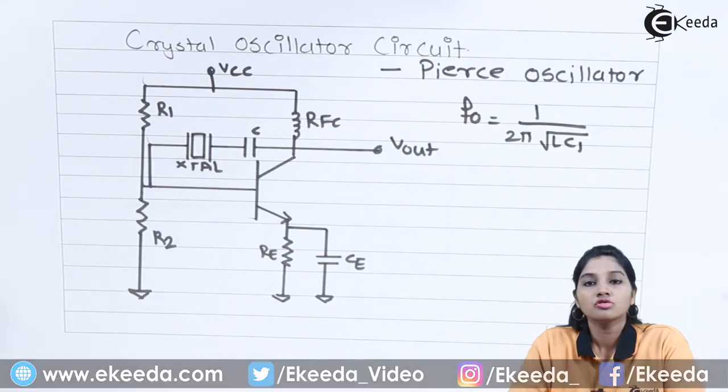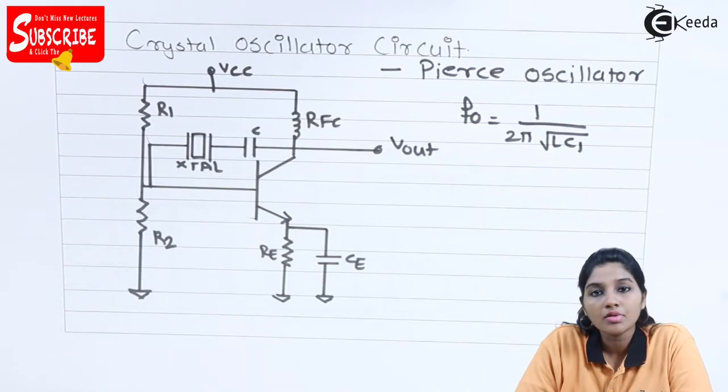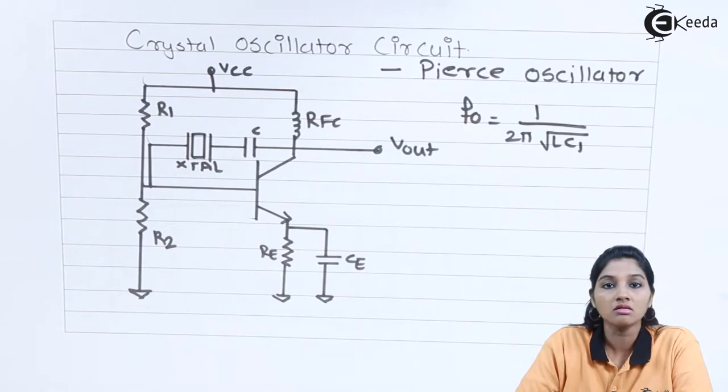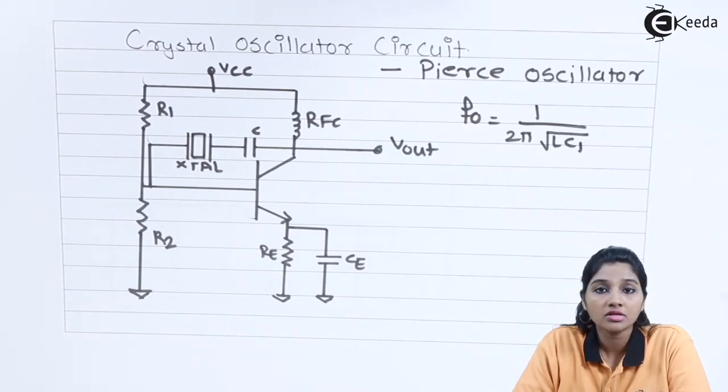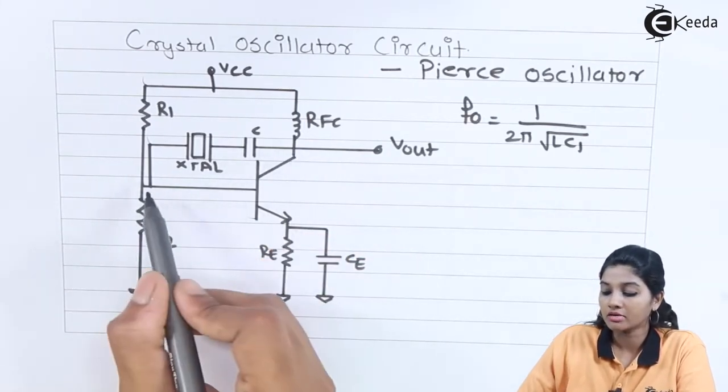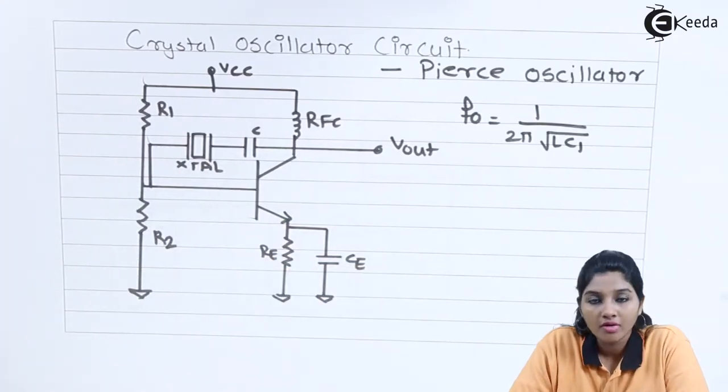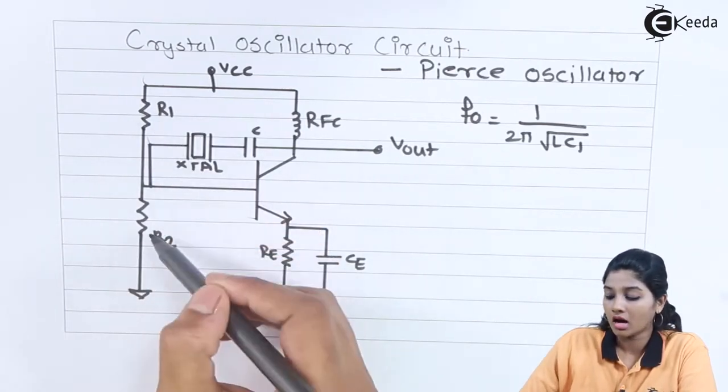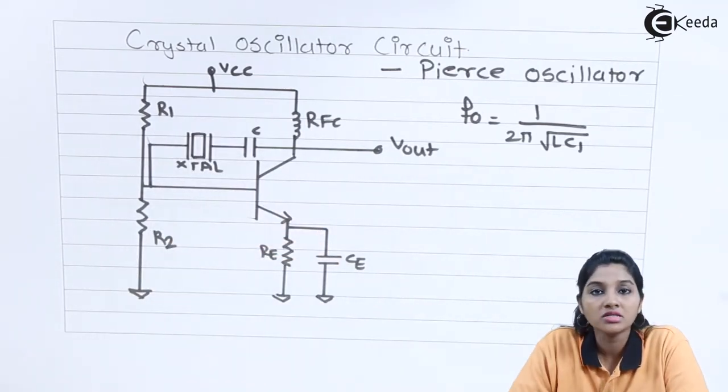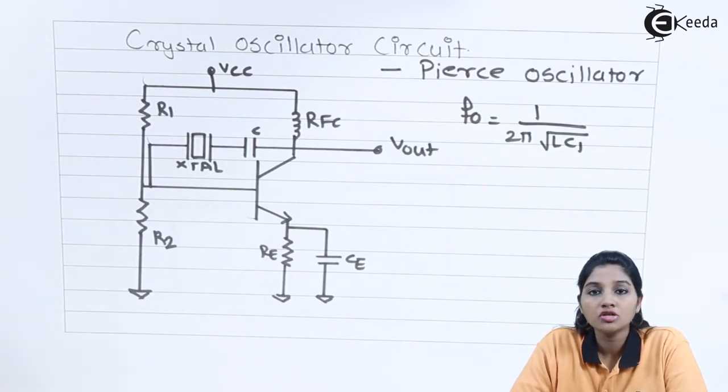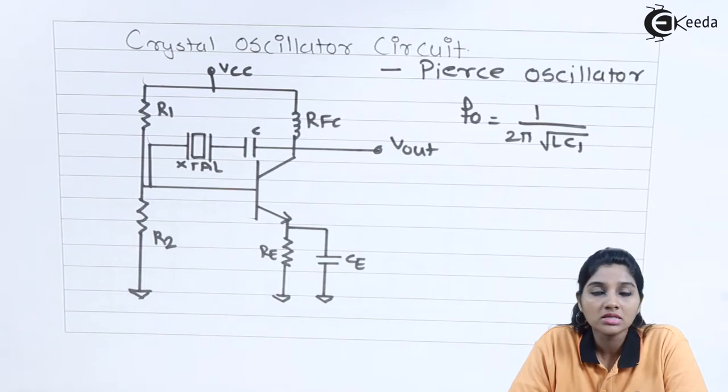Now let's see what Pierce crystal is. In the diagram, the symbolical representation of crystal oscillator is represented by XTAL. This is considered as a crystal oscillator and it is connected between feedback path, that is between collector and base of transistor. The resistor R1 R2 forms voltage divider and resistor R1 R2 along with RE provides DC bias to the transistor. The biasing is important because we need to amplify the output.